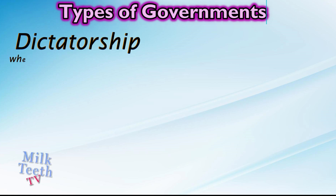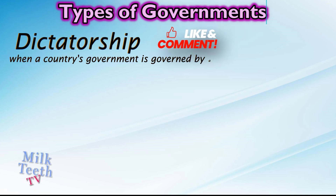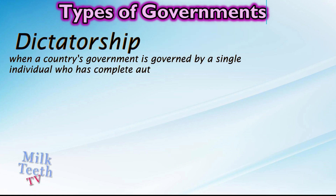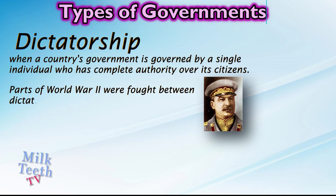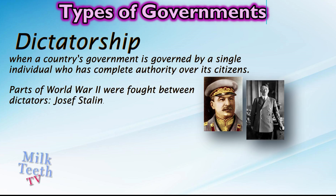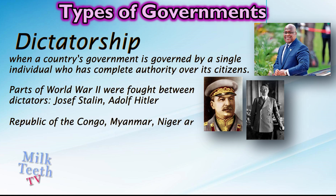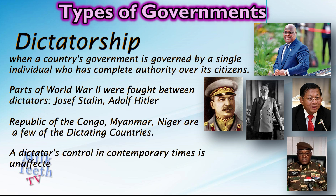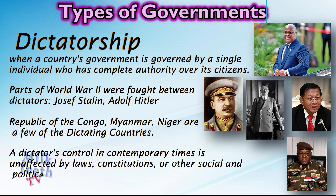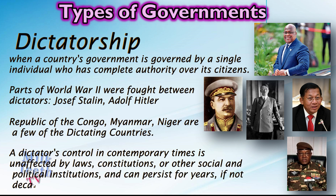Dictatorship: When a country's government is governed by a single individual who has complete authority over its citizens, it is called a dictatorship. Parts of World War II were fought between dictator countries, like Joseph Stalin from Russia and Adolf Hitler from Germany. Currently, the Republic of the Congo, Myanmar, and Niger are a few examples of dictatorships. A dictator's control in contemporary times is unaffected by laws, constitutions, or other social and political institutions, and can persist for years, if not decades.